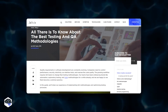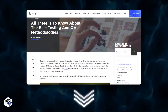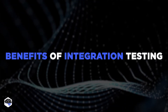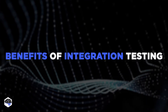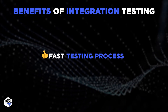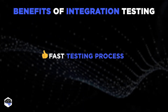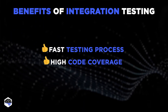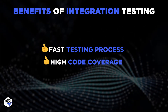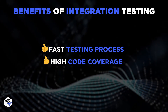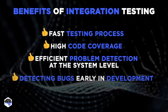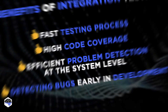We have a great guide on the best QA methodologies — you can find the link in the description box. As for integration testing, its main benefits include: a relatively fast testing process, as this method improves speed and simplifies end-to-end testing; high code coverage, as integration testing has a broad scope allowing QA specialists to test the entire system; efficient problem detection at the system level; and detecting bugs early in development.